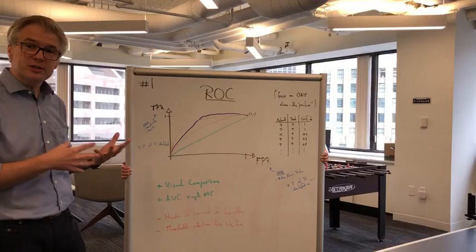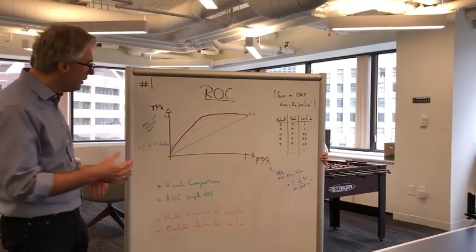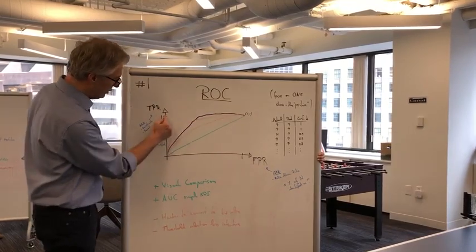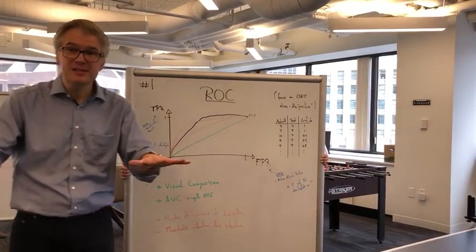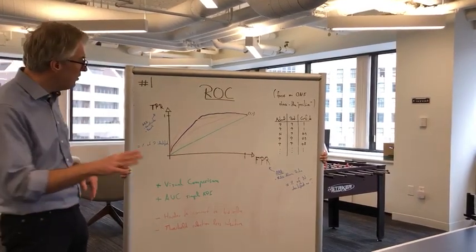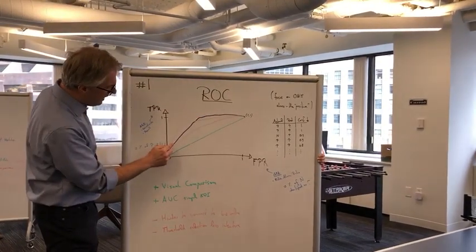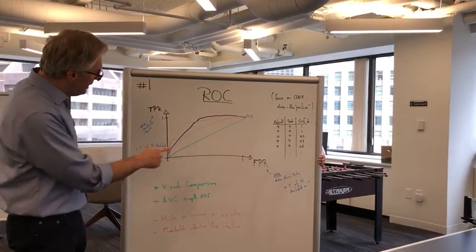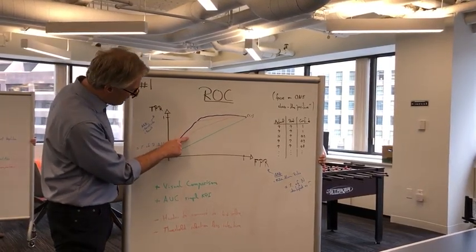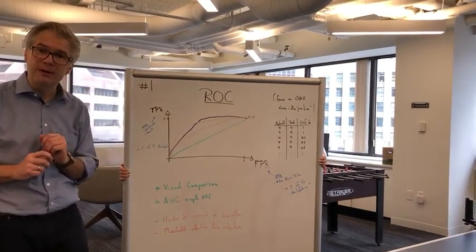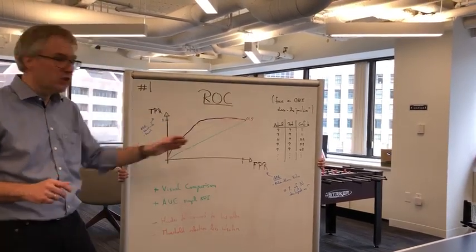And now, how can you use those curves to actually compare models? First of all, the perfect model would be something which is here at the top left corner. You will never see this in the wild because frankly, that would be very suspicious. Models typically never are that perfect. It should be above this green line, which would be a model that's just randomly guessing. And now you can say this red model here is actually less good than the orange and the purple one, because it's below the other curves across the board.